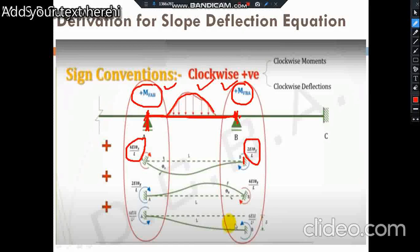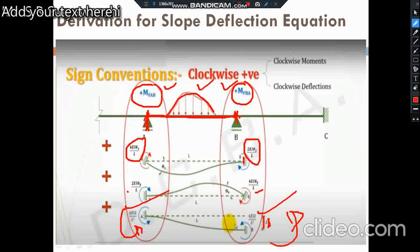Similarly, if we remove the fixity at B, the moment at that point is 4EIθB/L, where θB is the slope at B. To maintain fixity at A, the carried-over moment is 2EIθB/L. For the last case, if there is a settlement of support — say support B sinks — then the fixed end moments generated at both ends are anti-clockwise, given by 6EIδ/L² at both A and B.